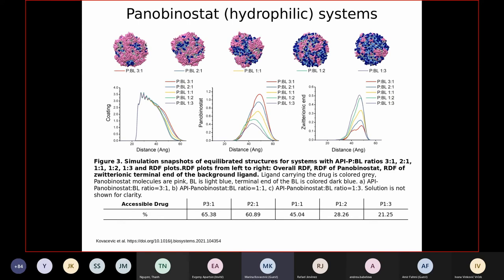But what's interesting here is that, despite the hydrophilicity of the drug and the ligand, and the voluminosity of panobinostat system, and the fact that the background ligand is significantly shorter than the ligand which carries the drug, by looking at the radial distribution function, and the percentages calculated here, we can see that some percentage of the drug is still hidden below the surface.